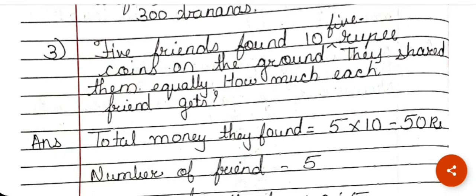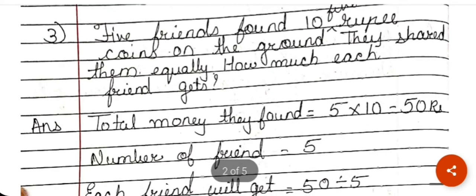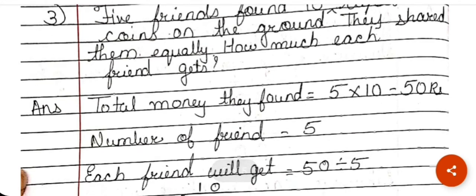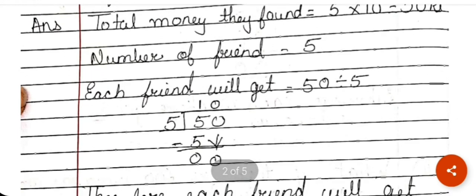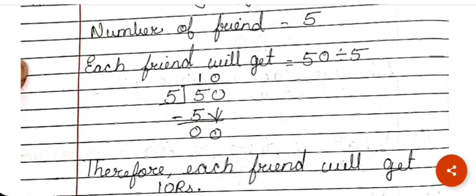Next problem: 5 friends found 10 coins of 5 rupees each on the ground and shared them equally. How much does each friend get? The total money is 10 × 5 = 50 rupees. We divide 50 by 5. Each friend will get 10 rupees.